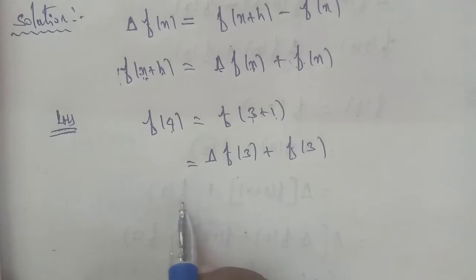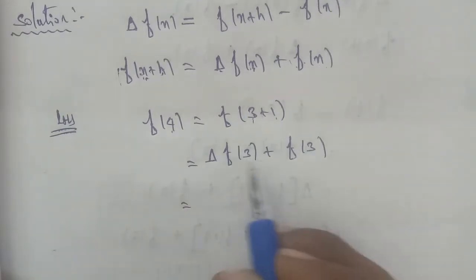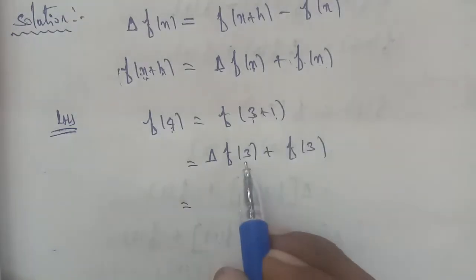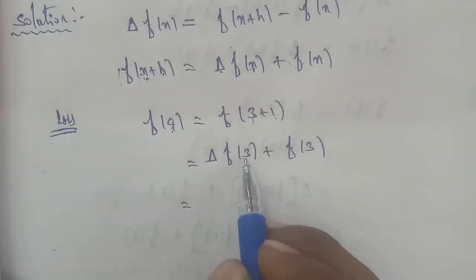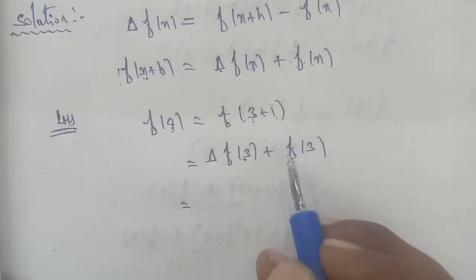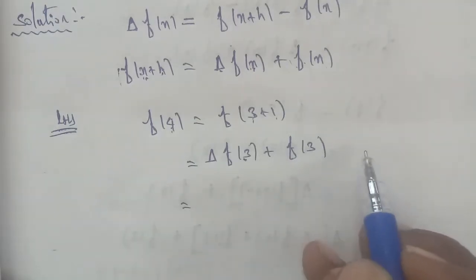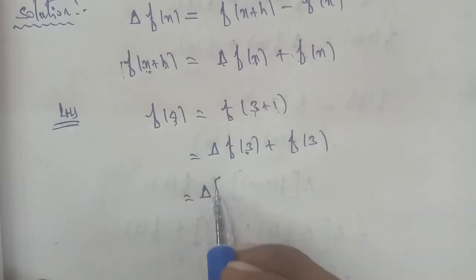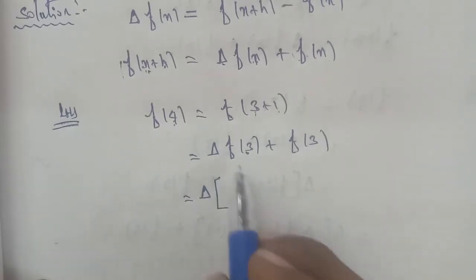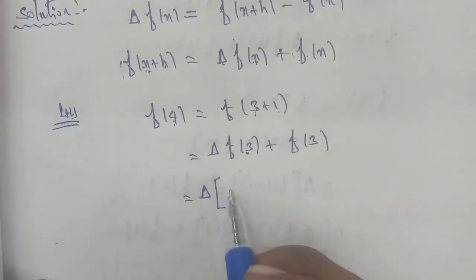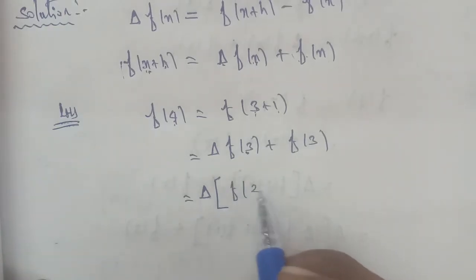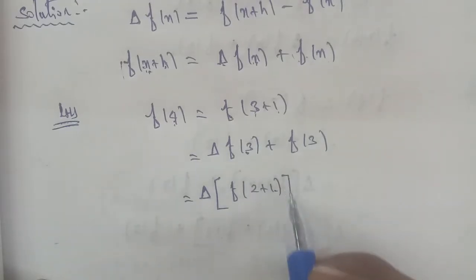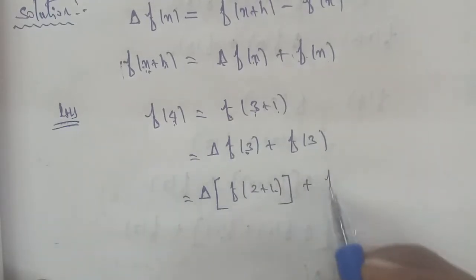Again, we apply delta here. We will split this: we put 4 as 3 plus 1. So we put 3 as 2 plus 1. This is delta. We put bracket. We put F of 3 — since 2 plus 1 is 3. We close the bracket, close to the plus f(3) entry.